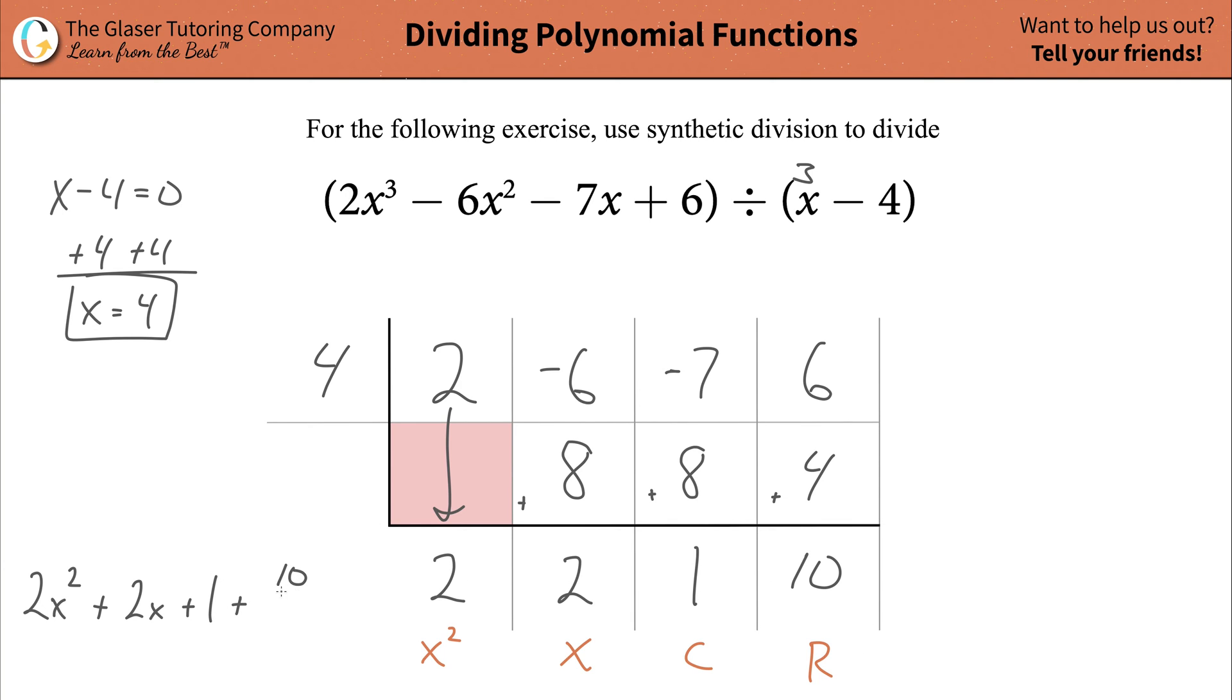And then your last term is the 10, it's positive 10, but what you have to do now since you have a remainder is take whatever value is in this column and put it over whatever your divisor was. So that's x minus 4. And that's it, ladies and gentlemen. This would be considered the quotient.